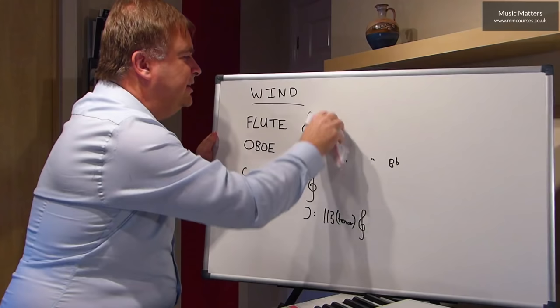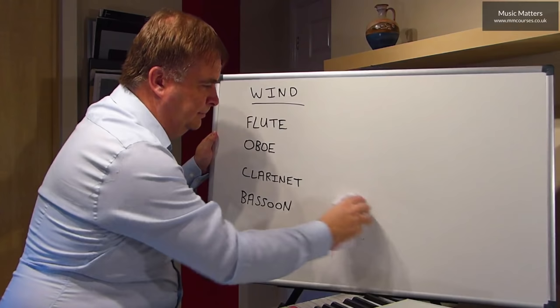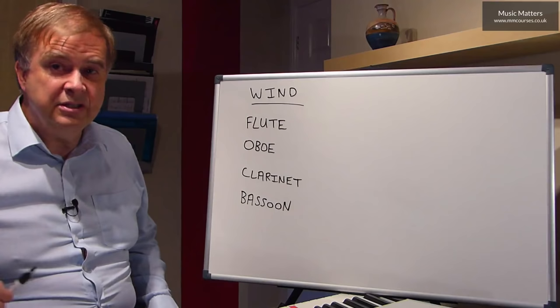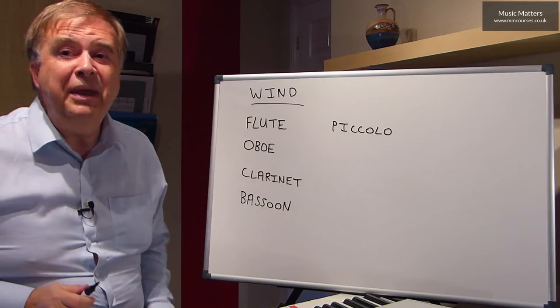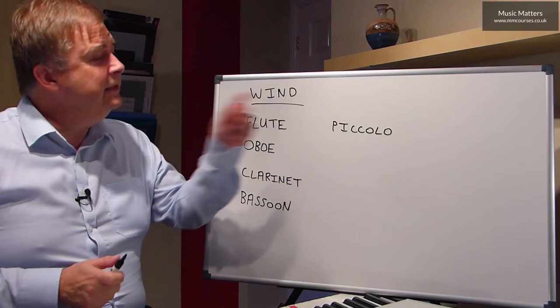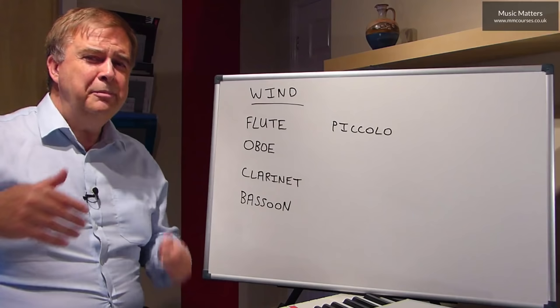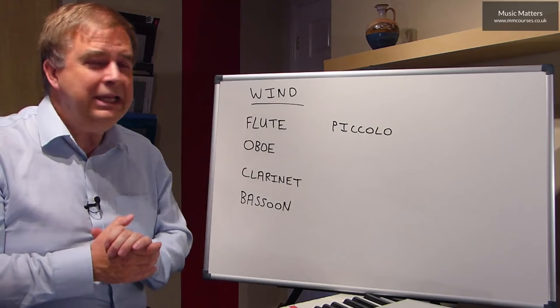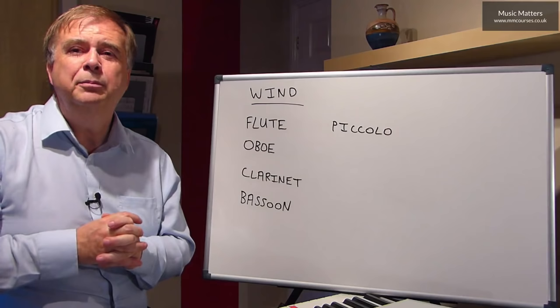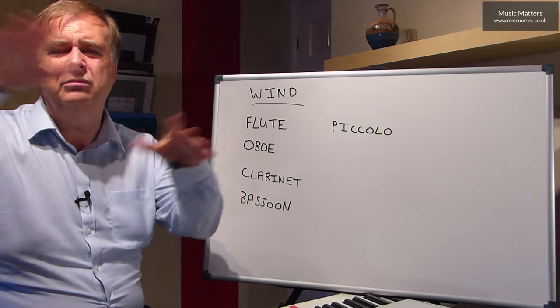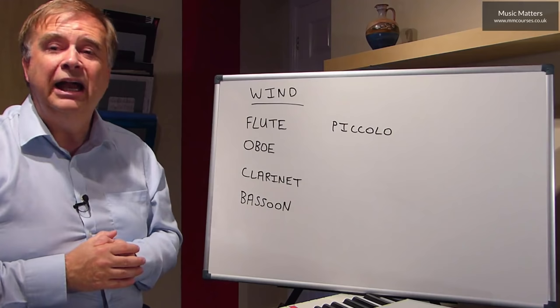Each of these woodwind instruments has a kind of partner. The flute has a partner called the piccolo — just like a baby flute, much smaller. The thing to note about the piccolo is it's sort of like the opposite of the double bass. Remember the double bass sounds an octave below the notes it reads. Well, the piccolo sounds an octave above the notes that it reads. If you wrote the piccolo notes at the pitch they actually sound, you'd be writing on loads of ledger lines above the treble clef — so it's easier to have them written lower and sounding an octave up.